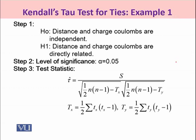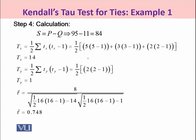To test the hypothesis, we formulate null and alternative hypotheses. The alternative is that distance and charge are directly related. The level of significance is 0.05. We use the test statistic corrected for ties. The first thing to calculate is S = P − Q = 95 − 11 = 84.